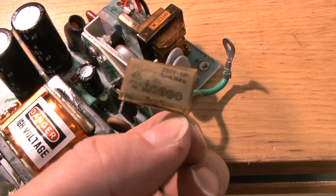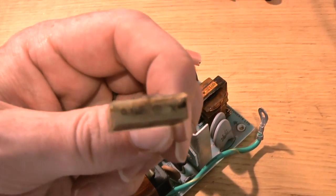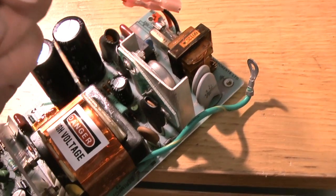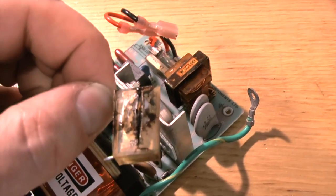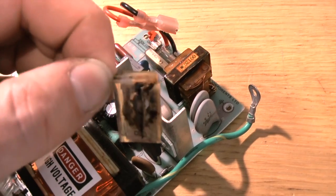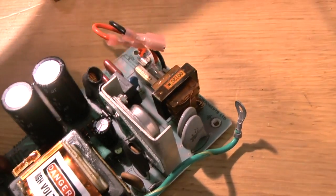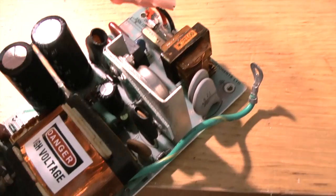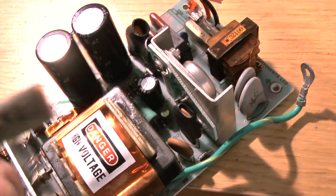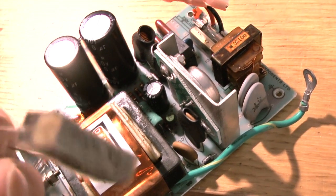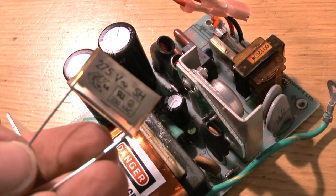So this is the capacitor that's gone bang, C2. This is 0.01 microfarads. And as you can see there, it's all split and discharged. This is nasty smelling ground stuff. So we'll put in the replacement, which I have here. Again, reasonable make, again 100 nF, same as 0.1 microfarad, 275 volts AC rated.